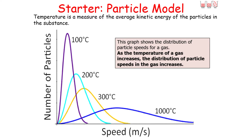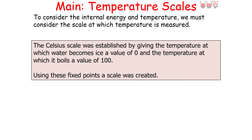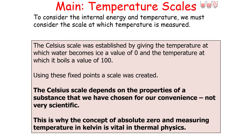To consider temperature, we need to consider what scale it is measured on. The most common example in the UK is the Celsius scale, established by giving the temperature at which water becomes ice a value of 0 degrees Celsius and the temperature at which it boils a value of 100 degrees Celsius. The Celsius scale depends on the properties of water, which is not very scientific or absolute. If water were not the most common substance on Earth, there would be no logical reason to base our temperature scale on it, which is why we must use the Kelvin scale.